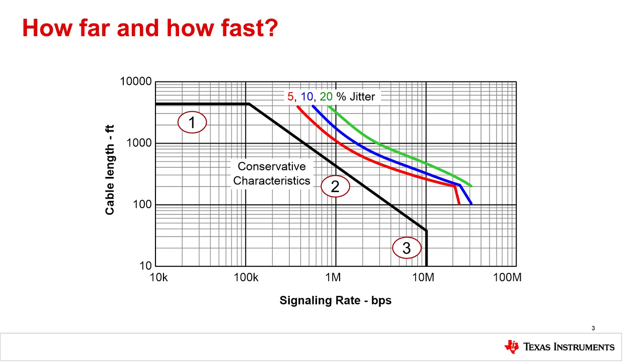In Region 1, the maximum distance is determined by the DC resistance of the cable. Here, the DC resistance of the cable approaches the value of the termination resistor, reducing the DC differential voltage appearing at the receiver by half. For a 22 AWG cable with a 120 ohm characteristic impedance and unshielded twisted pair, this occurs at approximately 1,200 meters.